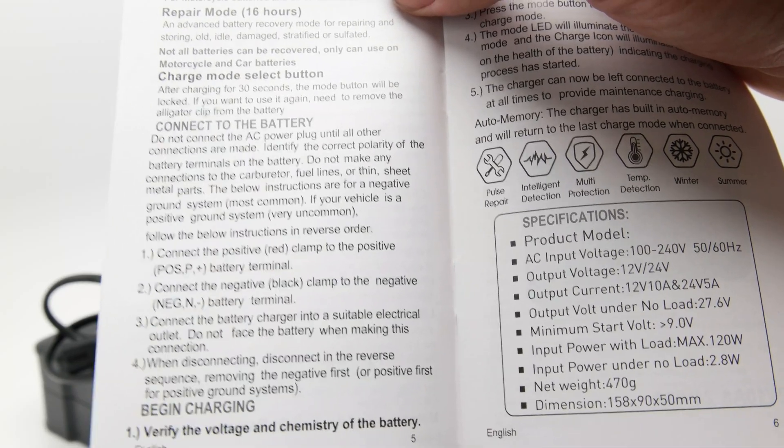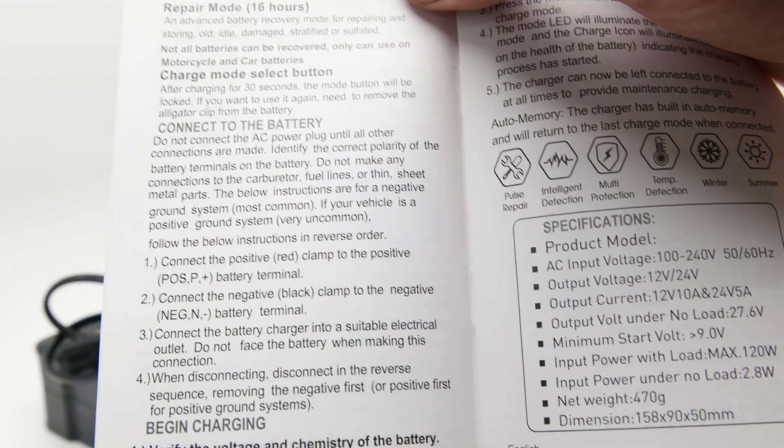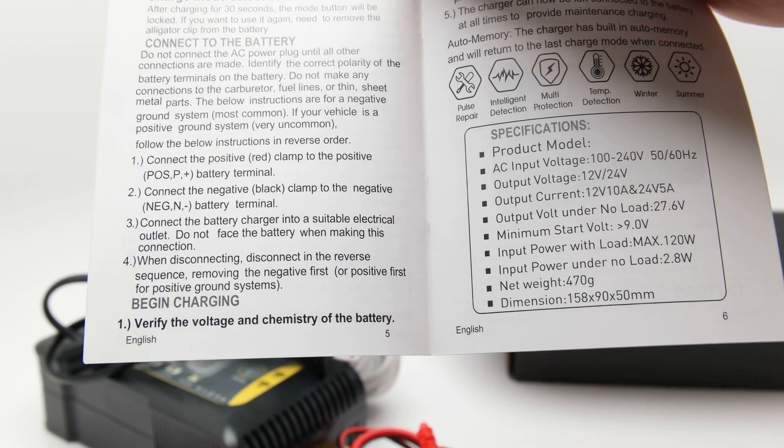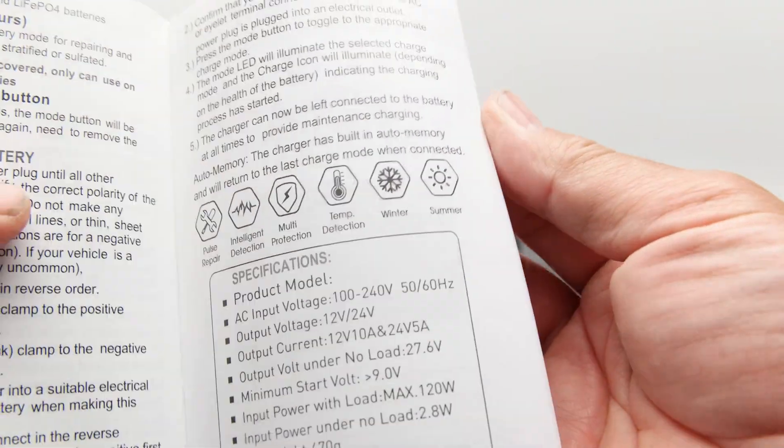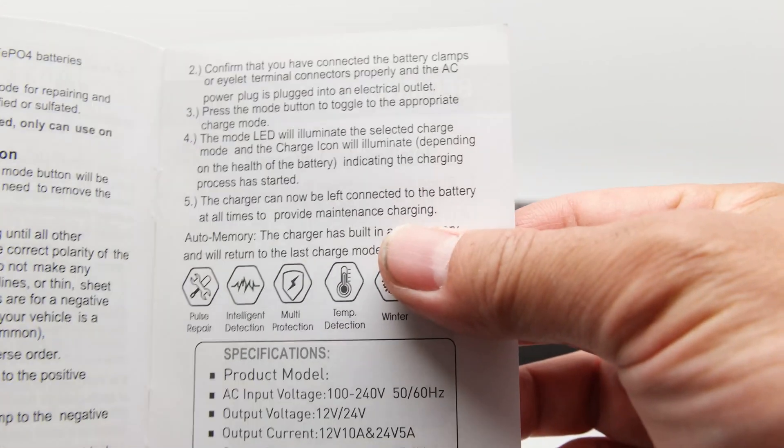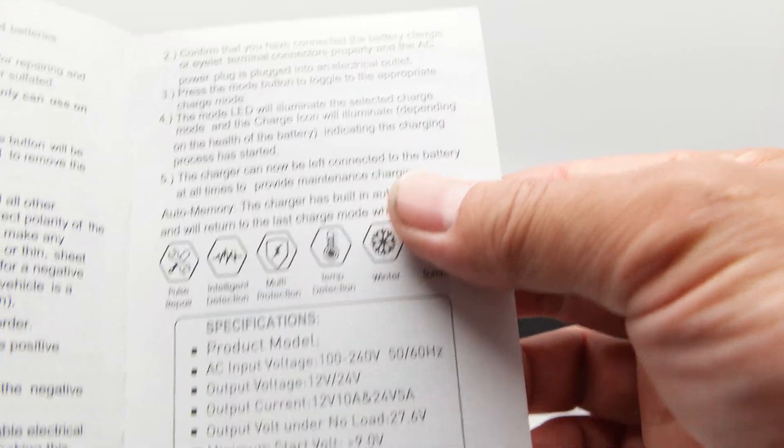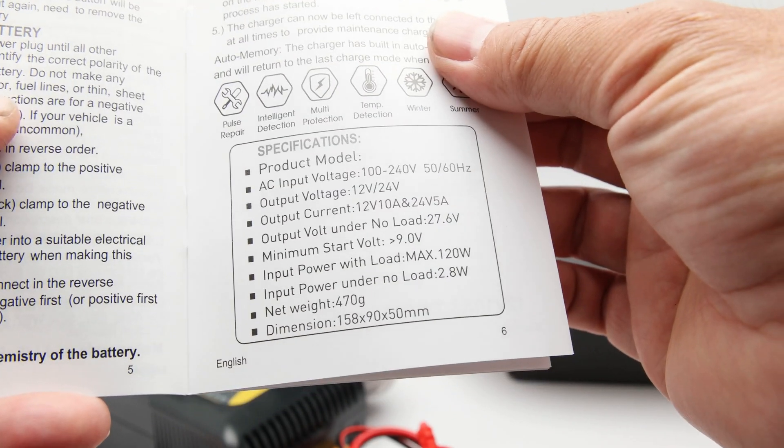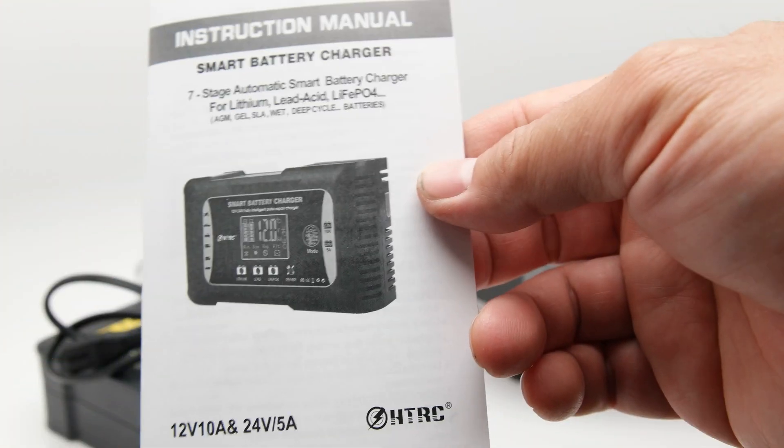Charge mode selection after charging for 30 seconds mode button will be locked. Okay, if you want to use it again, you need to remove the alligator clip from the battery and redo it again. So I guess that's good, because you don't want to inadvertently have the button pressed and switch to a different mode, which then could potentially cause some damage or issues with your battery. So that's pretty much it.